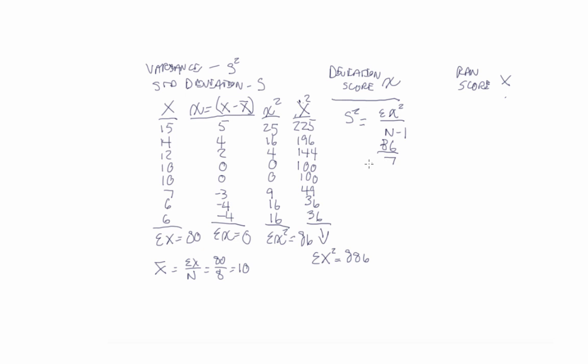So 86 over 7, and from that we get 12.29. The standard deviation is just the root of that. So we just take 12.29, get the square root of that, and that gives us 3.51.